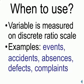Examples of variables that are frequently used with the Poisson distribution would be the occurrence of events, accidents, absences, defects, or customer complaints.